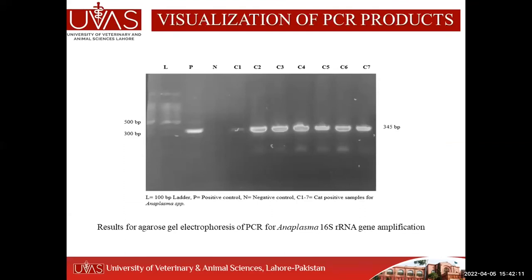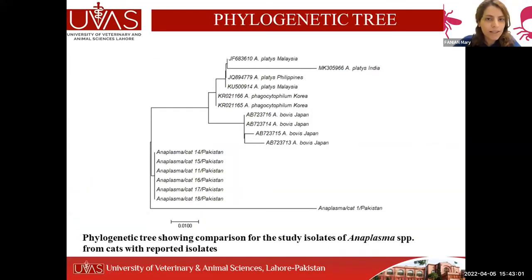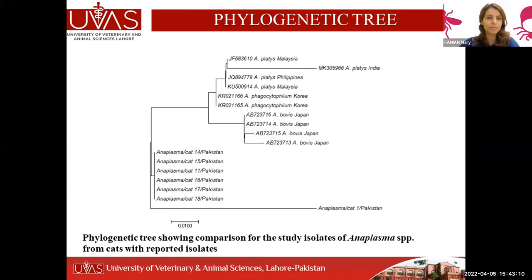Coming to the results: we obtained positive results for anaplasma from the cat samples. The sequences obtained after sequencing were processed through bioinformatic tools like BioEdit and MegaX, and the sequences were aligned. Comparing with sequences from NCBI, one sequence — anaplasma cat1 Pakistan — showed a substitution at some points compared to other anaplasma isolates. Phylogenetic analysis was also performed to check the similarity of study isolates with isolates from different countries.